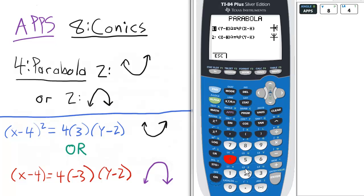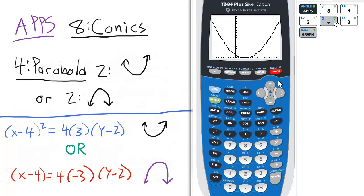So let's see that in action by pressing 2 to select it. And then let's have H is 4, K is 2, and let's have P as positive 3. And notice when I graph it, it will open up.